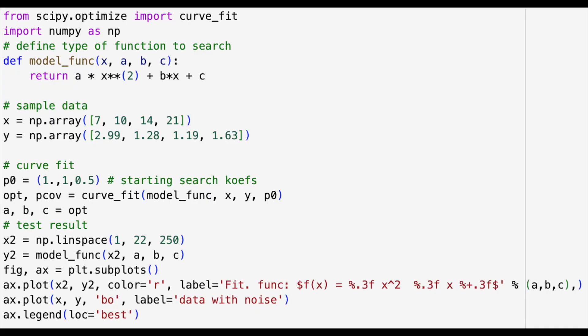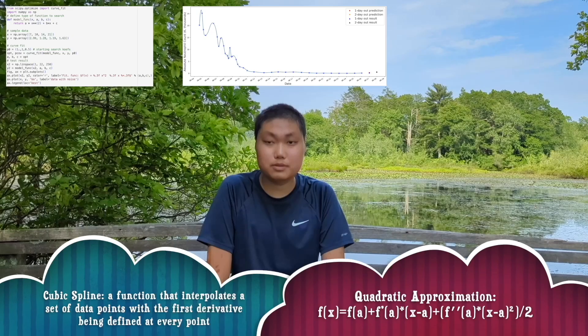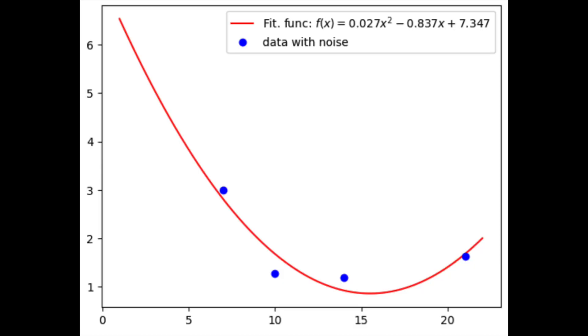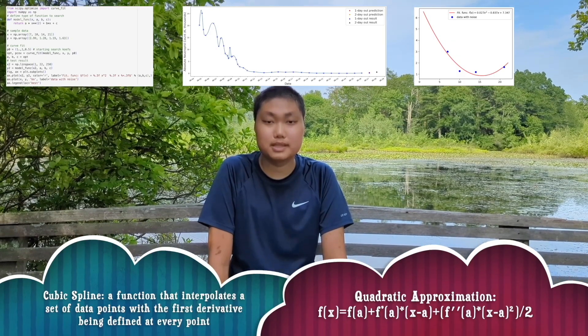To address this issue, I developed a Python program that predicts blood cell counts. The program uses cubic splines to fit the patient's previous blood cell count data and then uses quadratic approximation to generate a predicted value.